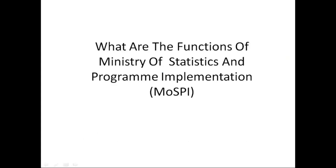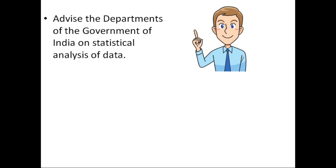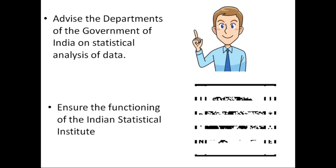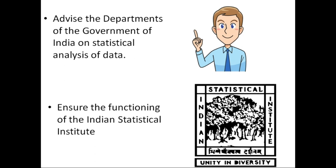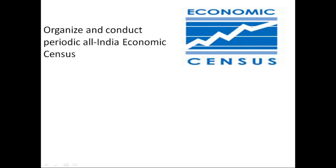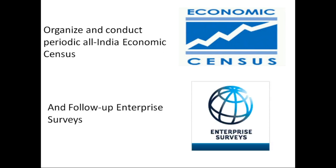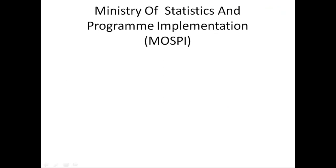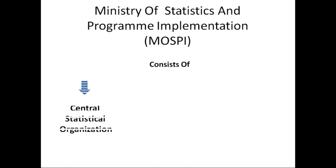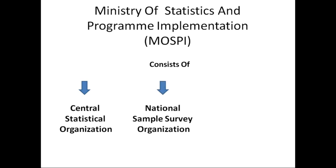The functions of the Ministry of Statistics and Program Implementation include advising departments of the Government of India on statistical analysis of data, ensuring the functioning of the Indian Statistical Institute, and organizing and conducting the periodic All India Economic Census and follow-up enterprise surveys. The Ministry consists of the Central Statistical Organization, National Sample Survey Organization, and Computer Center.